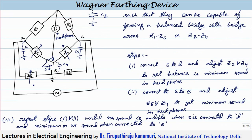The steps to follow are: first, connect the switch to point D — it acts like a normal bridge. Even though current is passing through Z5 and Z6, it does not affect the bridge. Now adjust the value of Z2 and Z4 to get the minimum sound possible in the headphones. Zero sound may not be possible because of the effect of C2 and C4, so we adjust Z2 and Z4 until the minimum possible sound is obtained. Once that minimum balance is obtained, change the switch to point E.